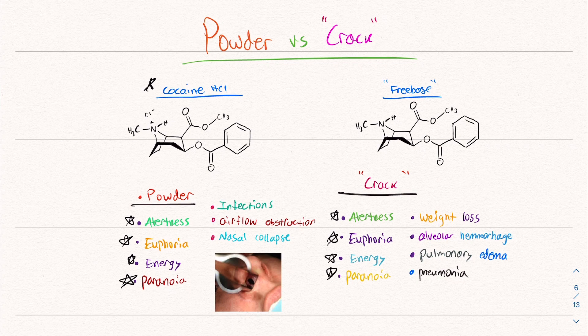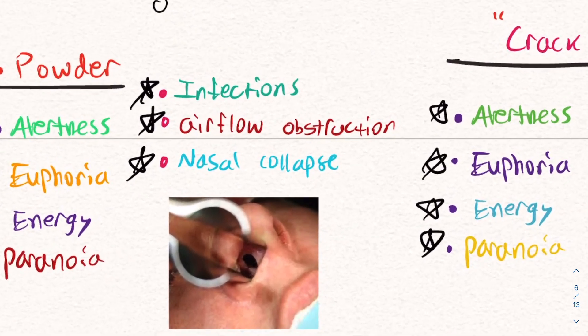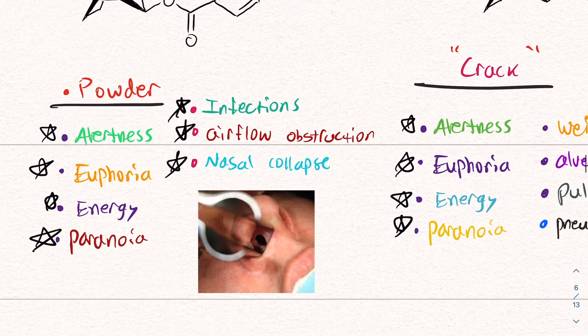And then we talked about the side effects of cocaine use, especially consistent cocaine use. Infections, airflow obstruction, nasal collapse, and this perforated septum. I'm going to zoom in just to reinforce that this is not something you want to put in your nose because it can destroy your whole nasal function. And it's just not a good look at all.